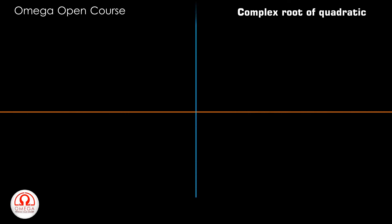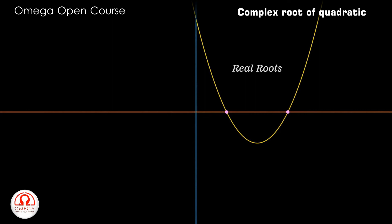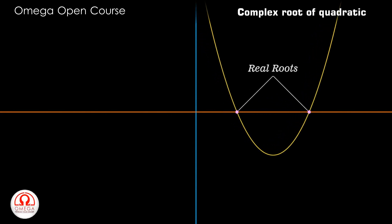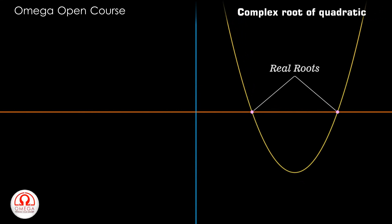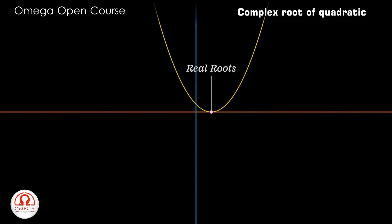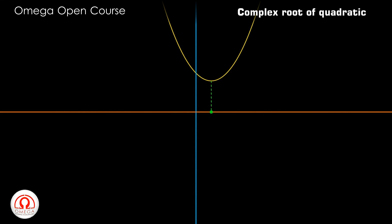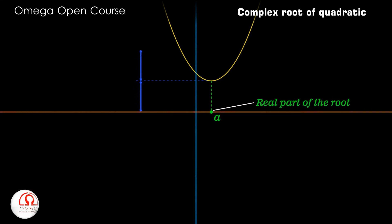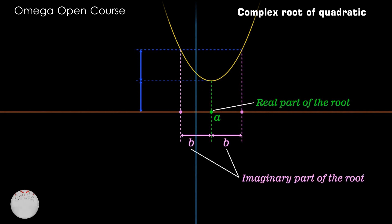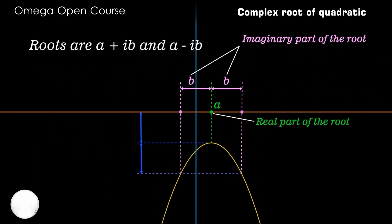To summarize: to find the complex roots of a quadratic equation from the graph, first plot the graph of the given quadratic expression — you will get a parabola. If the parabola intersects or touches the x-axis, it has real roots at those points of intersection or contact. If the graph does not intersect the x-axis, draw a vertical line through the vertex; where it meets the x-axis gives the real part of the root. Then draw a horizontal line at height twice the height of the vertex from the x-axis, and drop vertical lines from those intersection points to the x-axis — the distance of these points from the real part gives the imaginary part of the root. If the leading coefficient is negative, you get an inverted parabola, but the steps remain the same.